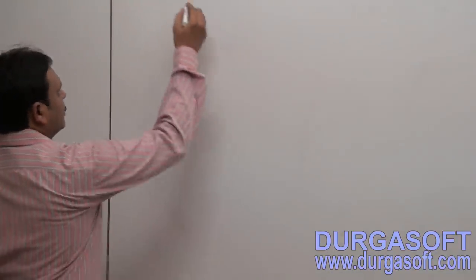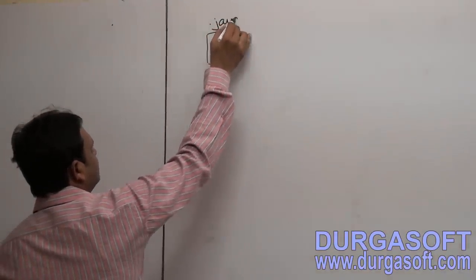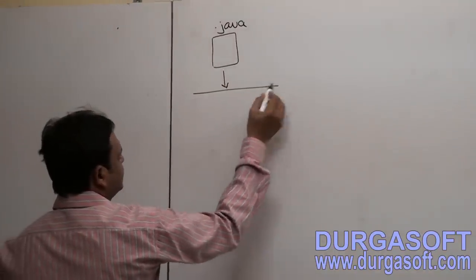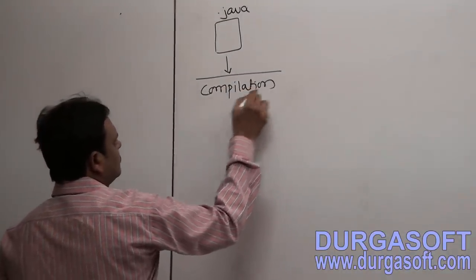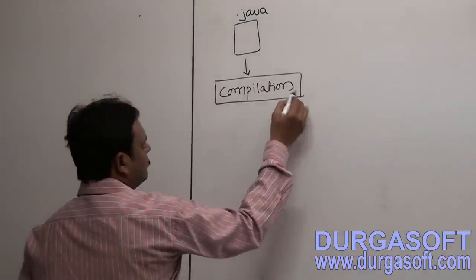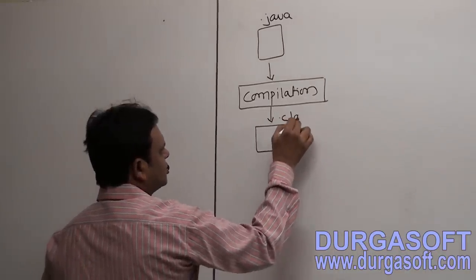The answer for this is very simple. To understand the answer, we need to see what exactly the compilation structure. For example, I have taken a Java file — this is a .java file. When I compile this .java file, automatically we are able to get a .class file.